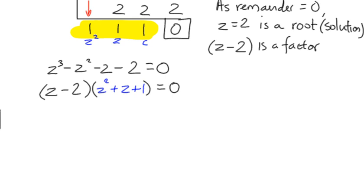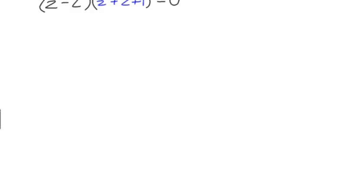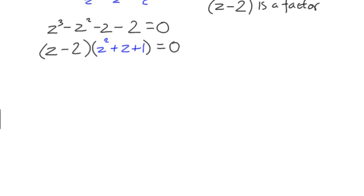That's us factorized it, so we can say, quite rightly, that either z minus 2 equals 0, of which we know that is already true, or z² plus z plus 1 equals 0. In other words, this is where the other two solutions are going to come from.